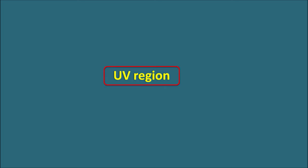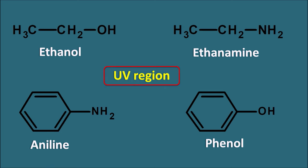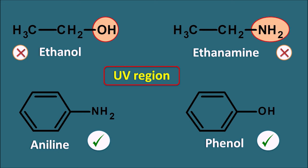Now let us consider the UV region and take the previous examples: ethanol, ethanamine, aniline, and phenol. Let us see whether they are able to absorb within the UV region or not. Ethanol is not absorbing within the UV region, ethanamine cannot absorb, but aniline can absorb and phenol can absorb. We can observe that ethanol and ethanamine have polar functional groups attached to the alkyl chain, but the same functional groups when attached to the aromatic ring system can absorb UV radiation.